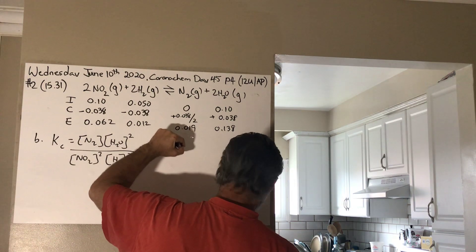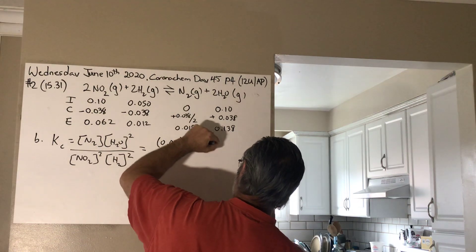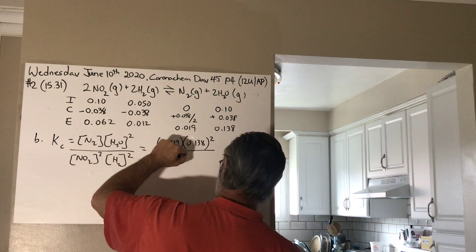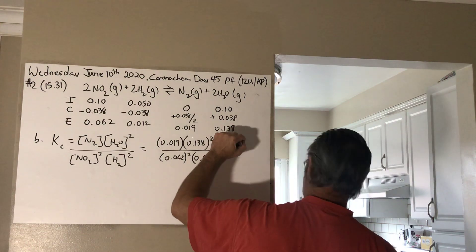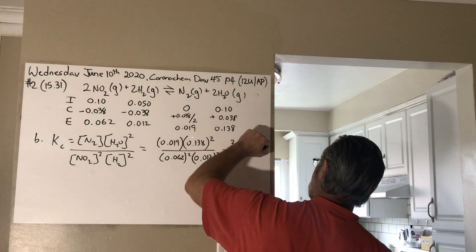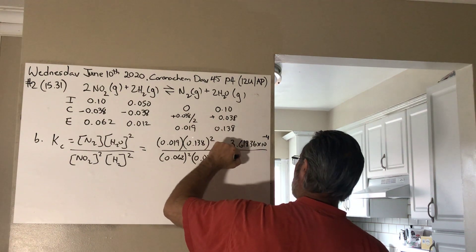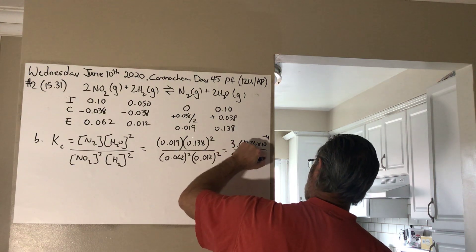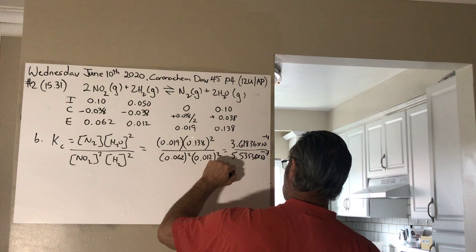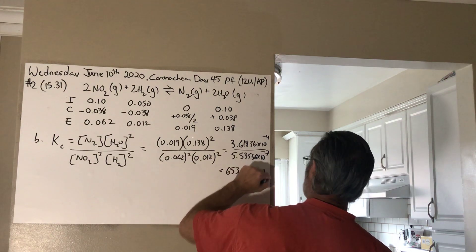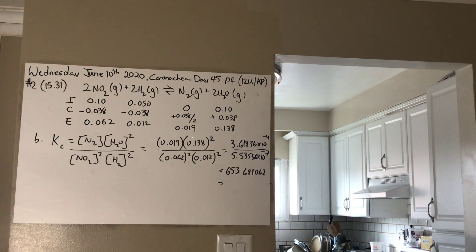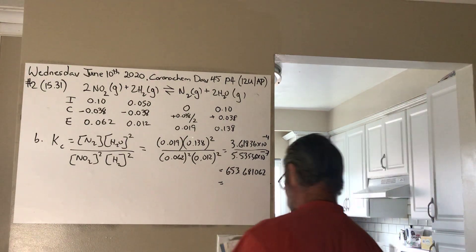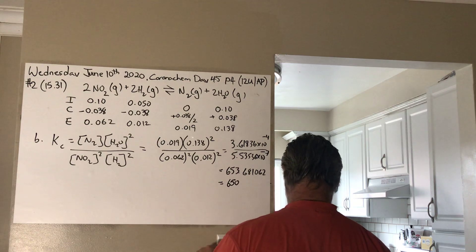What that works out to is 0.019 raised to the power of 1, 0.138 to the power of 2, over 0.062 to the power of 2, and 0.012 to the power of 2. Which gives you 3.6136 times 10 to the power of negative 4, over 5.53536 times 10 to the power of negative 7, and that gives you 653.68102. You're only allowed, strictly speaking, 2 sig figs, so you can only really say 650 as the value of Kc.